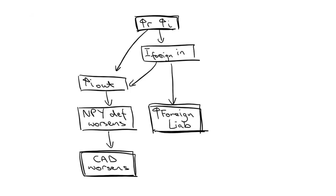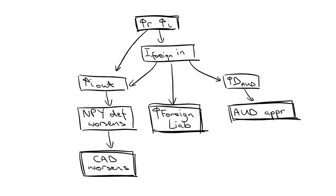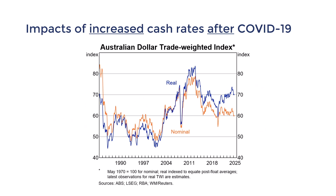Another aspect of external stability that could be impacted by changes in the cash rate is the exchange rate and subsequently international competitiveness. As increased cash rates attract foreign investments, these inflows cause increased demand for the AUD, causing an appreciation. This could have contributed to the rising TWI, which correlates with a period of tight monetary policy.